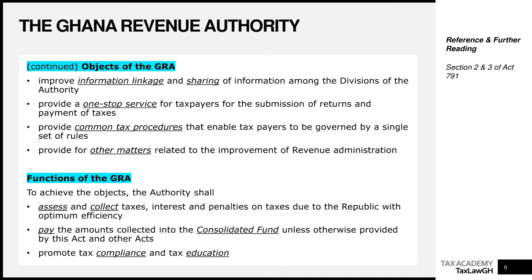Now let's look at the functions of the GRA — what they are set out to do to meet these objectives. The first function is to assess and collect taxes, interest, and penalties on taxes due to the Republic with optimum efficiency. They assess taxpayers and then collect these taxes to raise the much-needed tax revenue for national development.